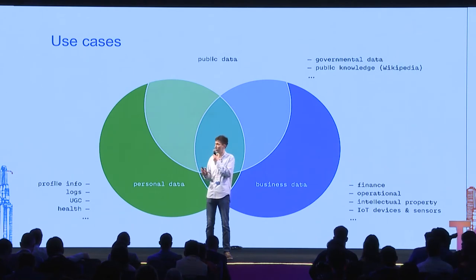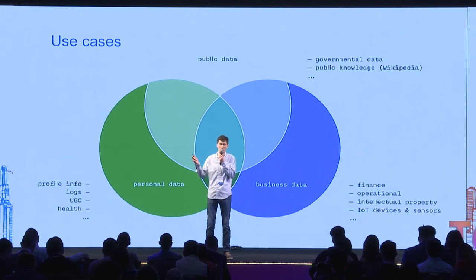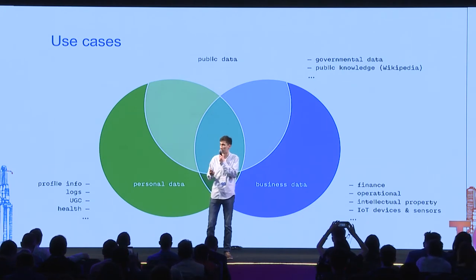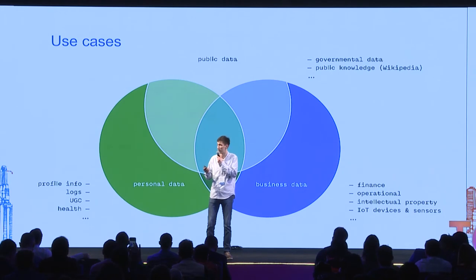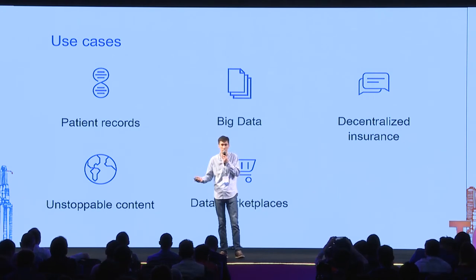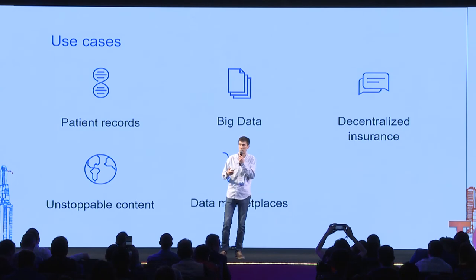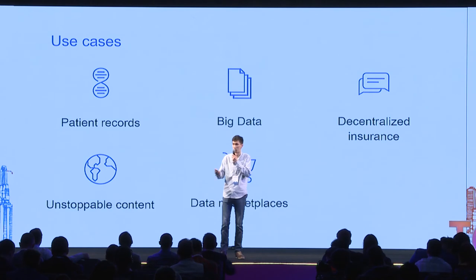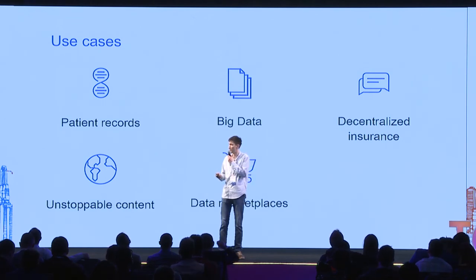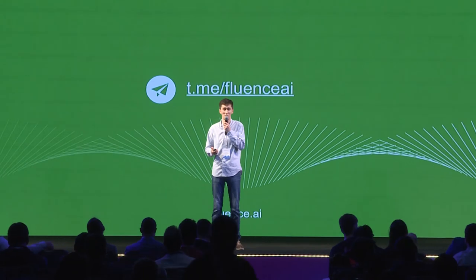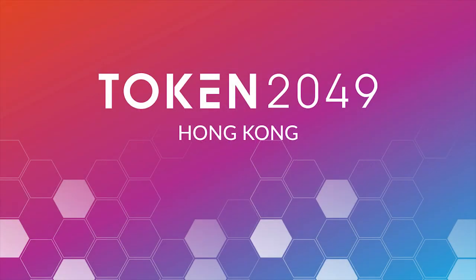Just a few use cases: this can be used for any kind of public data — like our Wikipedia example — or private data like our hospital example, or any personal or business data. More specific examples include patient-controlled medical records, a decentralized WikiLeaks that cannot be stopped by any government, or processing huge amounts of data thanks to near-infinite scalability. That's what we are building at Fluence. Thank you for your attention.